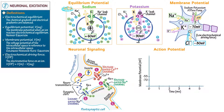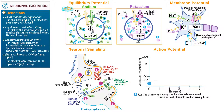First, indicate that at time zero, the resting state membrane potential is at negative 70 millivolts. Write that the voltage-gated ion channels are closed and that potassium leak channels are the driving force — they drive the membrane potential towards the equilibrium potential of potassium.